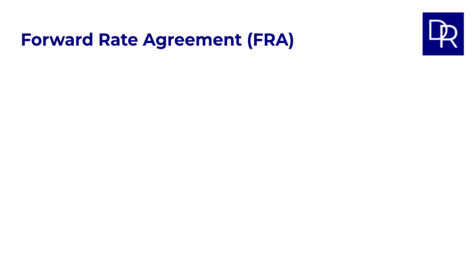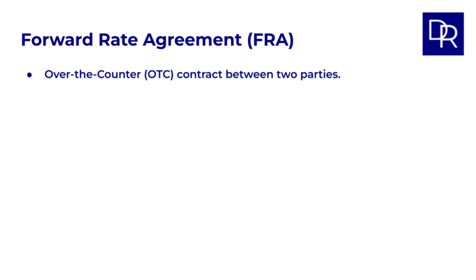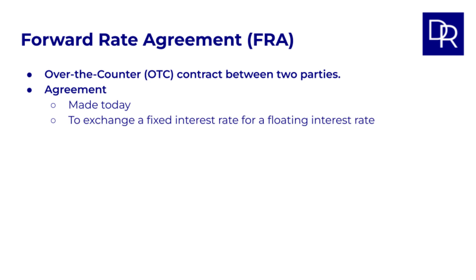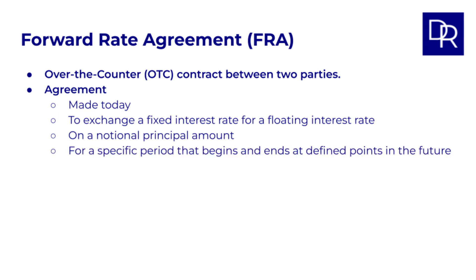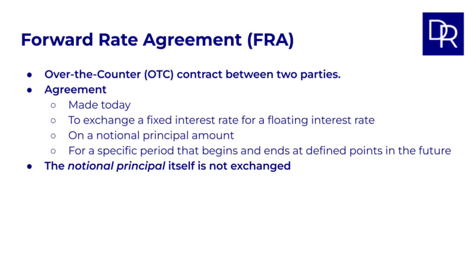So what exactly is a Forward Rate Agreement? It's an over-the-counter, or OTC, contract between two parties. It's essentially an agreement made today to exchange the fixed interest rate for a floating interest rate on a notional principle amount, for a specific period that begins and ends at defined points in the future. Unlike a bond or a loan, the notional principle itself is typically not exchanged. Instead, the FRA is cash settled.